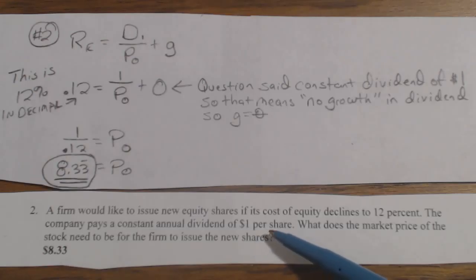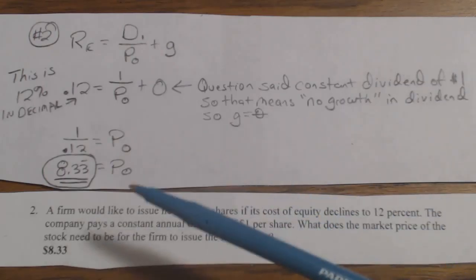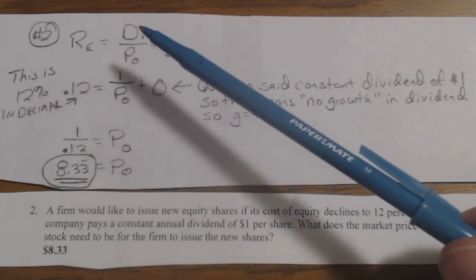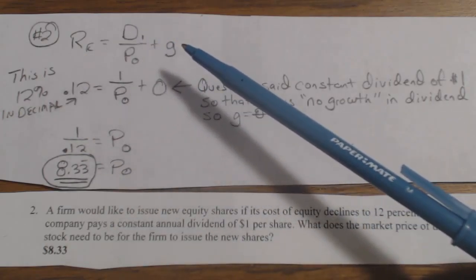there is no growth, because the growth is the growth in the dividend. Remember, the G is the growth in the dividend. What does the market price of the stock need to be for the firm to issue new shares? So the cost of equity, RE, remember it's RE equals D1 over P0 plus the growth rate.